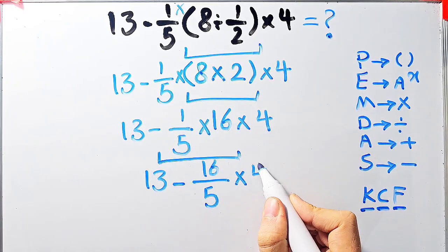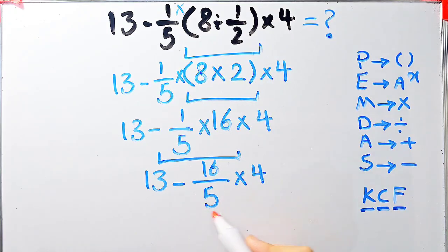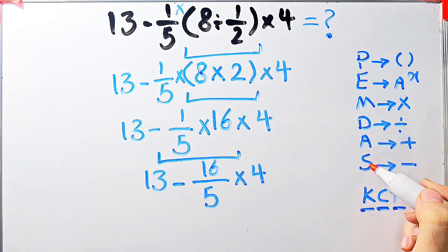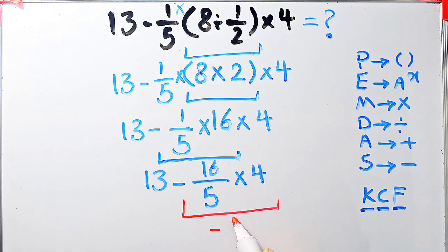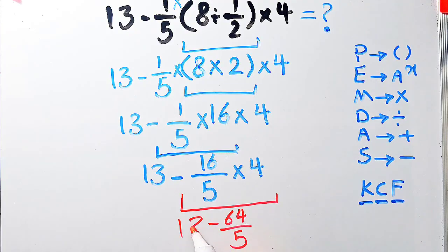Again we have subtraction and multiplication. First we simplify this multiplication because multiplication has higher priority than subtraction: negative 16 over 5 times 4 equals negative 64 over 5. Now the question is 13 minus 64 over 5.